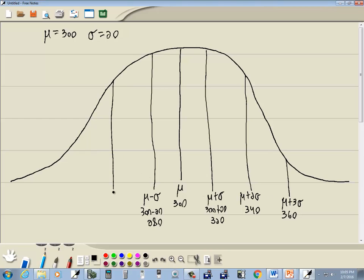Okay. Over to here. This will be mu minus two sigma. And this will be mu minus three sigma. And I'm subtracting 20. 300 minus 20 is 280, 260, and 240.